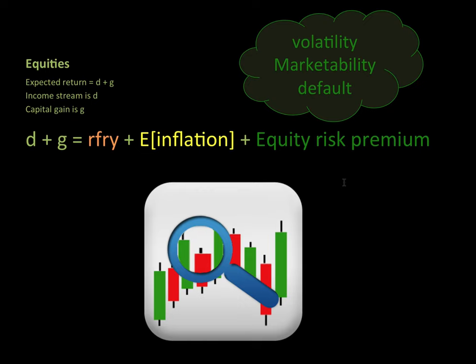For equities, the expected return is equal to D plus G, where D is the income stream or dividends, and G denotes the capital gains or increase in share price. Again, we're going to see the risk-free yield plus expected inflation plus something known as the equity risk premium. The equity risk premium incorporates marketability and default risk, but also something known as volatility — the stock market has extra volatility caused by irrational investors or herd mentality, and that needs to be considered in the overall risk premium.